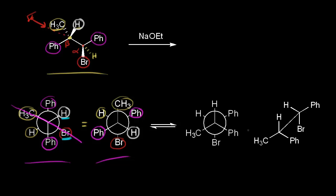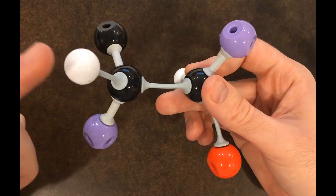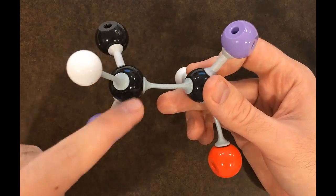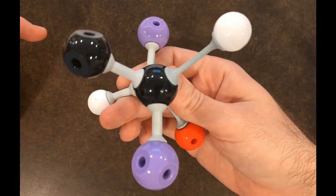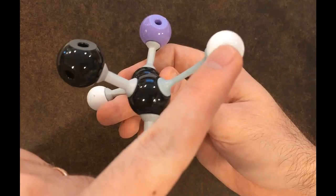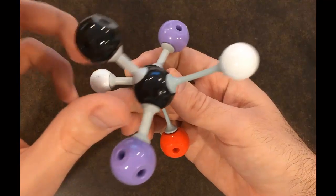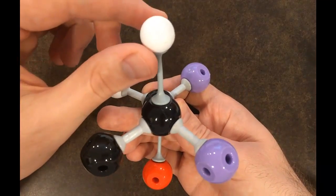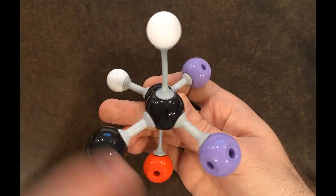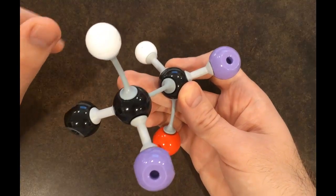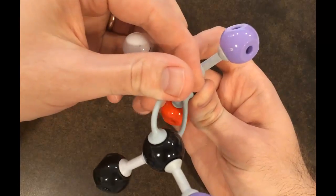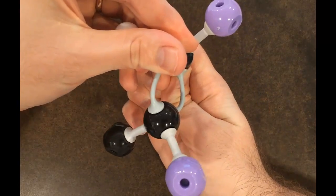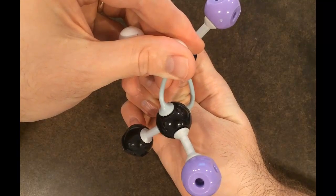In the video, we rotate about the single bond to get into a conformation where the beta proton is antiperiplanar to the bromine. In the Newman projection, after rotation, the beta hydrogen is not antiperiplanar with the bromine, so we rotate until it is. Notice that now the two phenyl groups are gauche to each other. Turning to the sawhorse projection, when we remove the beta proton and the bromine, the two phenyl groups end up on the same side of the double bond.